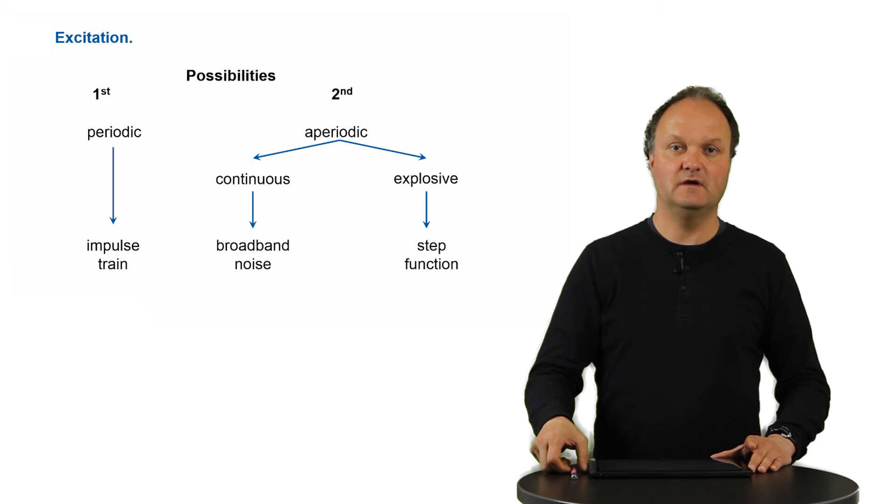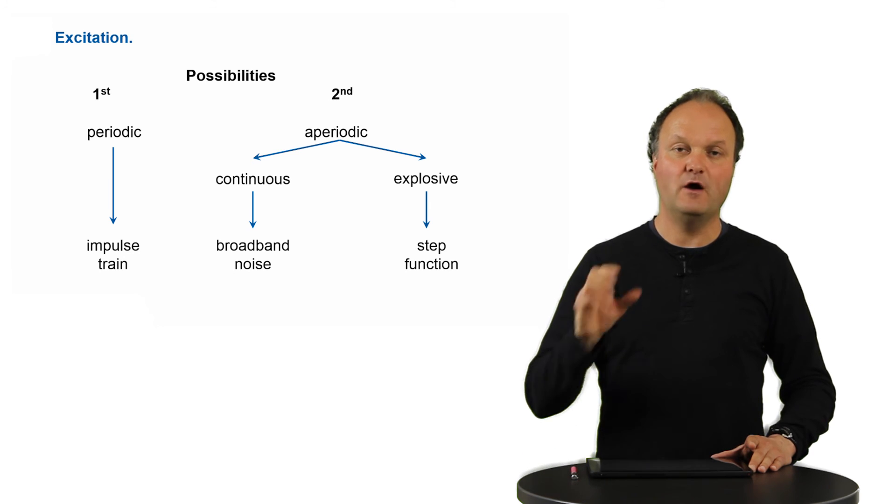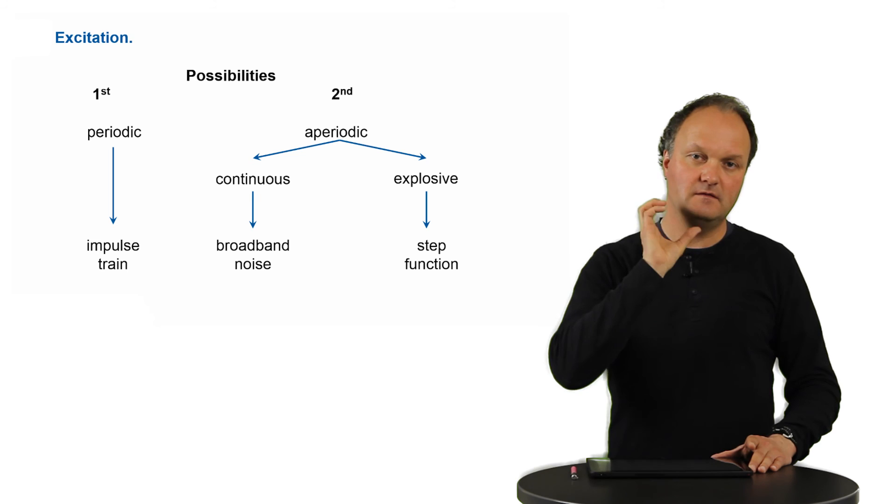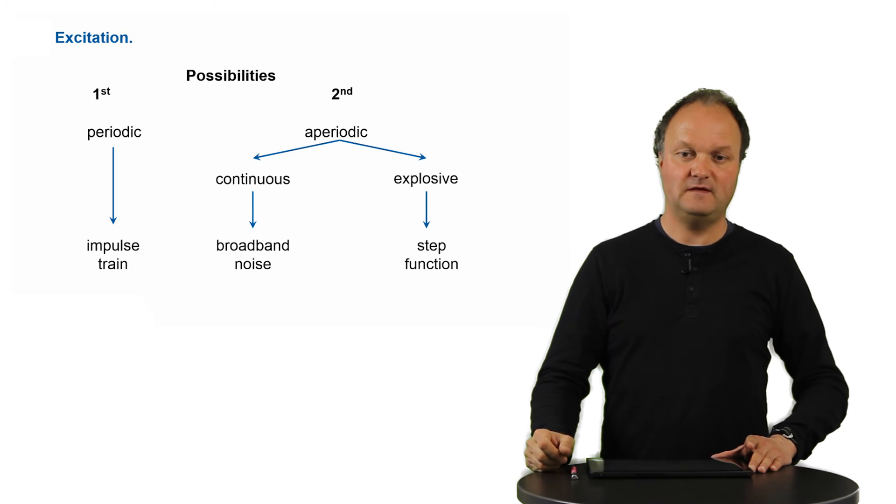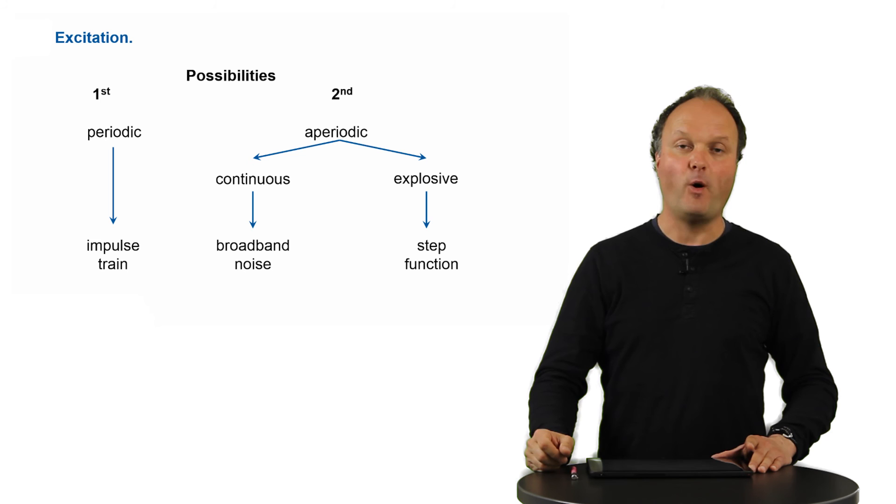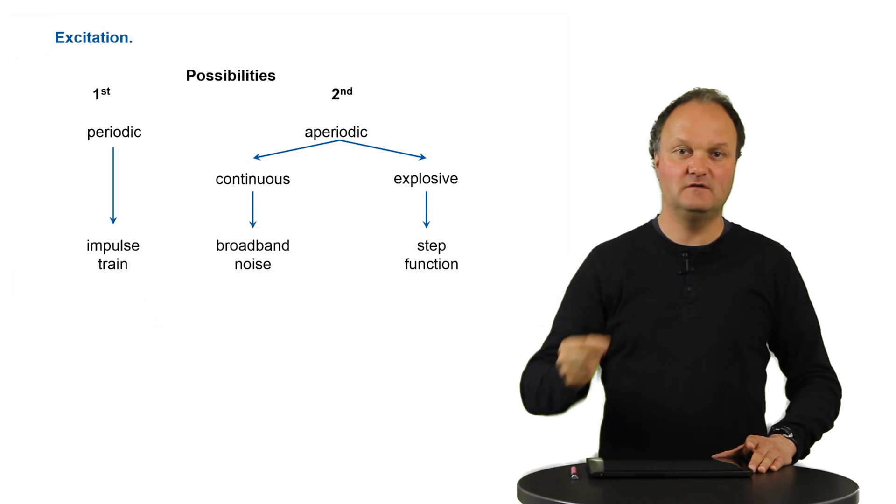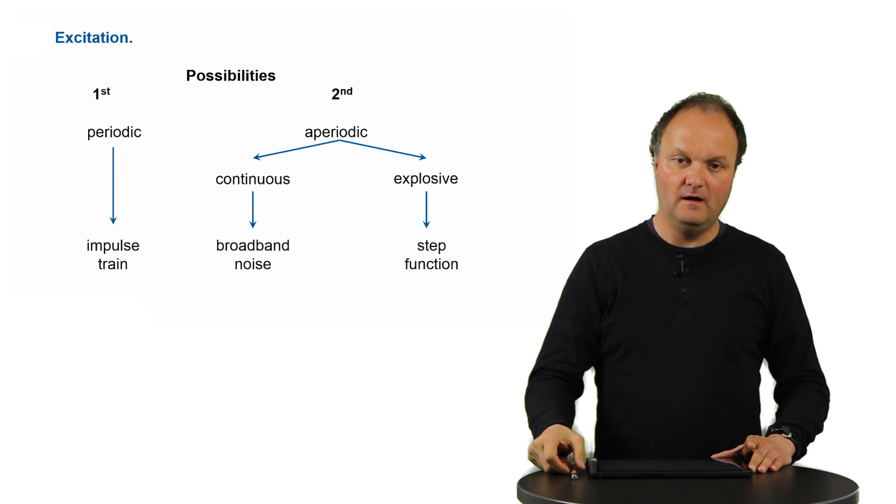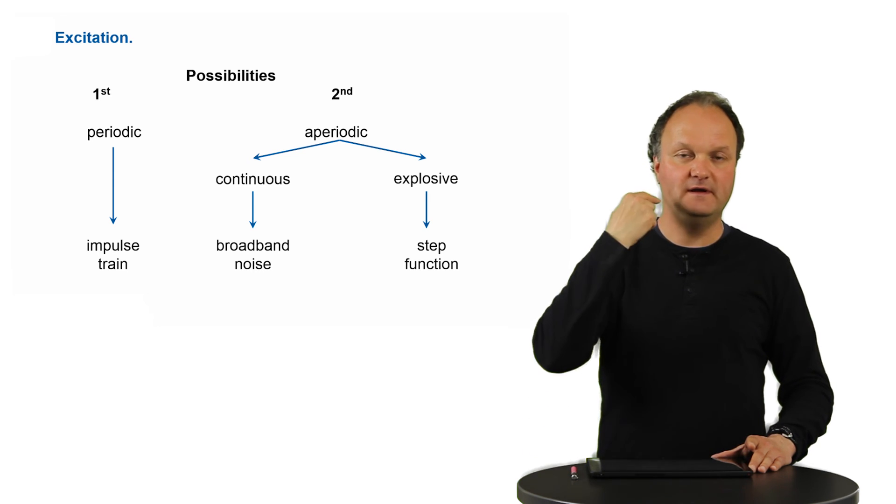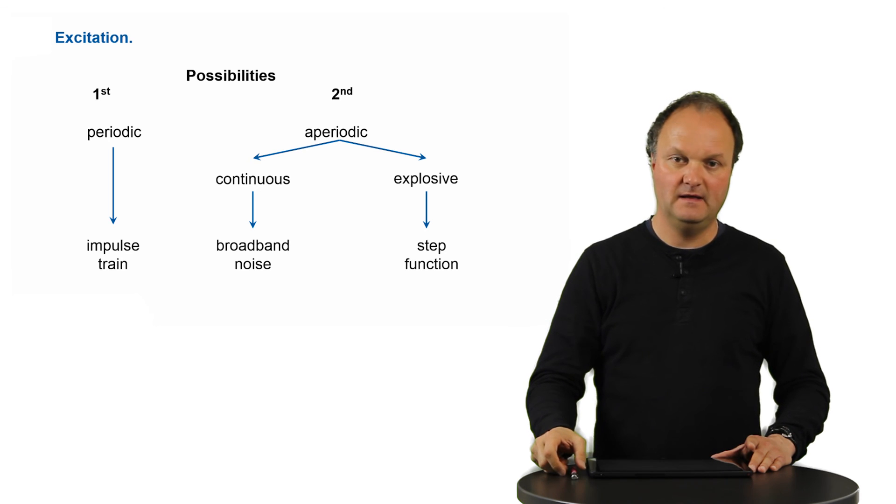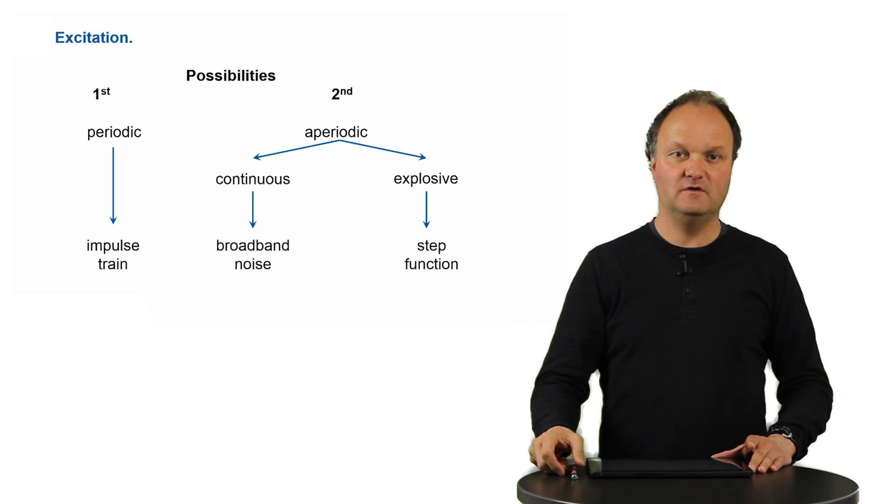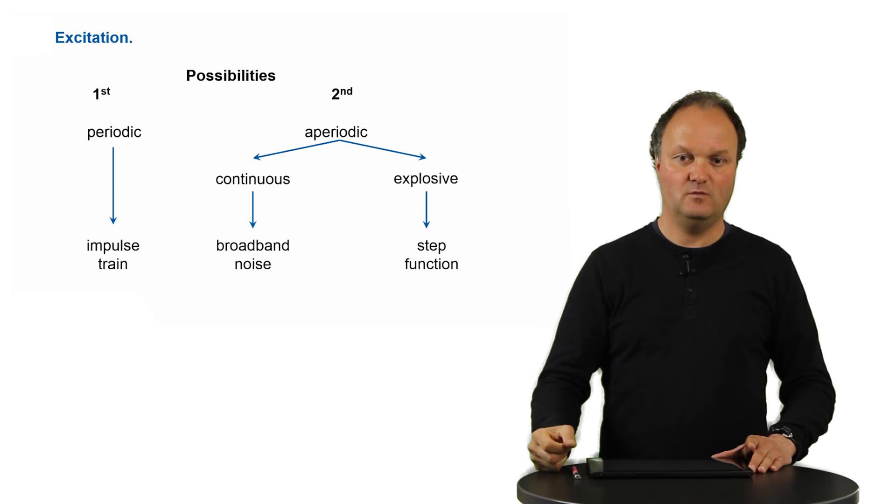The second way of producing a non-periodic signal is to use an explosive signal produced by opening the vocal cavity, the mouth, at a certain point. This happens, for example, for a b or p sound at the lips, or a d or t sound where you open it at a point behind your teeth, or a g or k sound where you open it a little bit more inside your mouth cavity. This sudden opening produces a step-like function, which is also non-periodic, but it's only one instance where it happens.